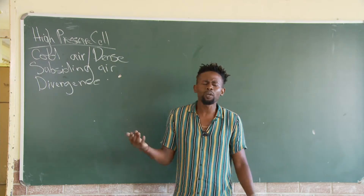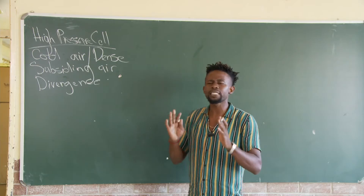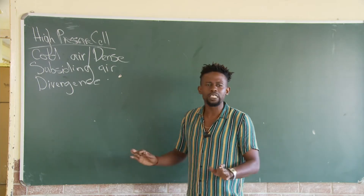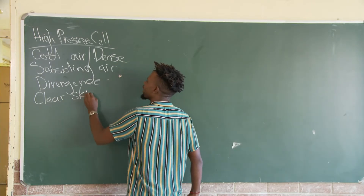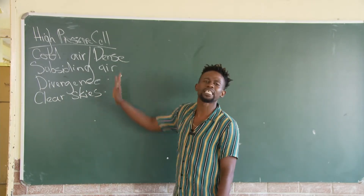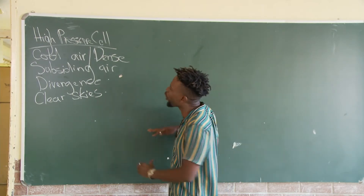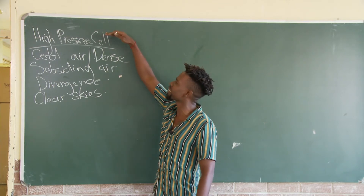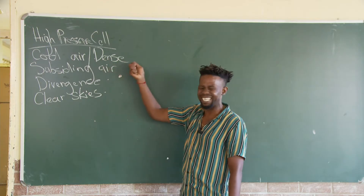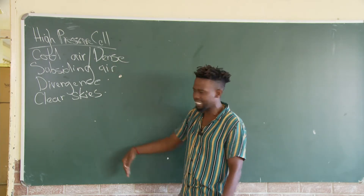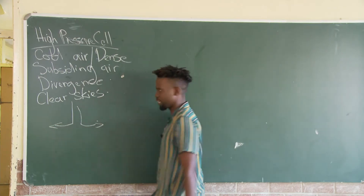And what weather conditions are associated with the high-pressure cell? Automatikali, you know uguti there are clear skies. Because why? There is no rising air. What causes clouds? It is the hot air that is rising. In this case, we are looking at a high-pressure cell. A high-pressure cell is cold air that is dense, so it will subside. And once it subsides, it will diverge on the surface.